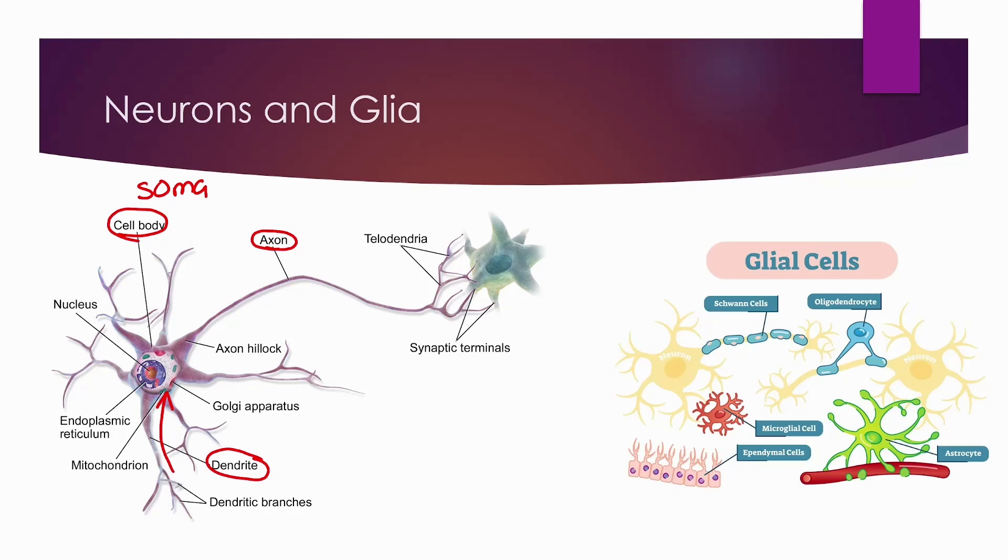Send it to the endoplasmic reticulum, the Golgi apparatus, etc., and eventually it will start to propagate responsive signals in the axon hillock. The axon hillock is basically where you propagate enough signals to send out an action potential. Action potentials are how neurons send their signals.